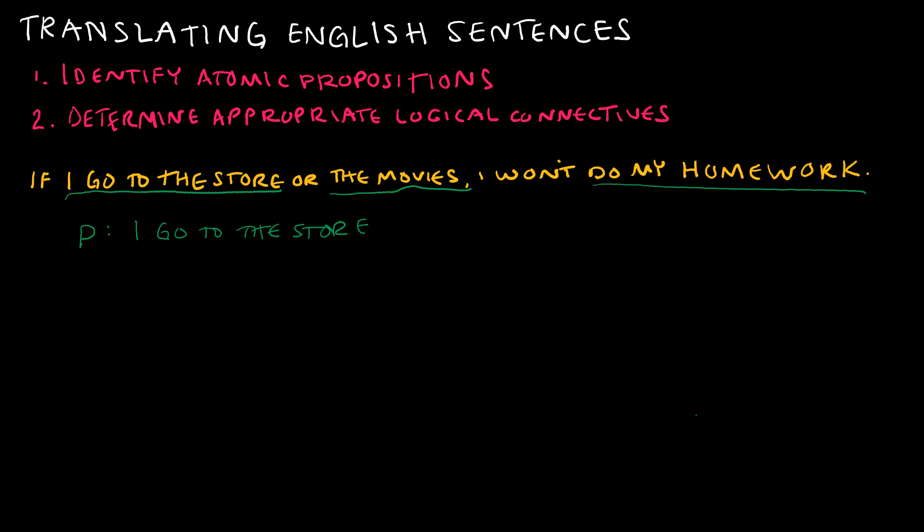It's important to understand that there are a lot of correct ways to translate these. This is one correct way. P is I go to the store, Q is I go to the movies, and R is I do my homework.